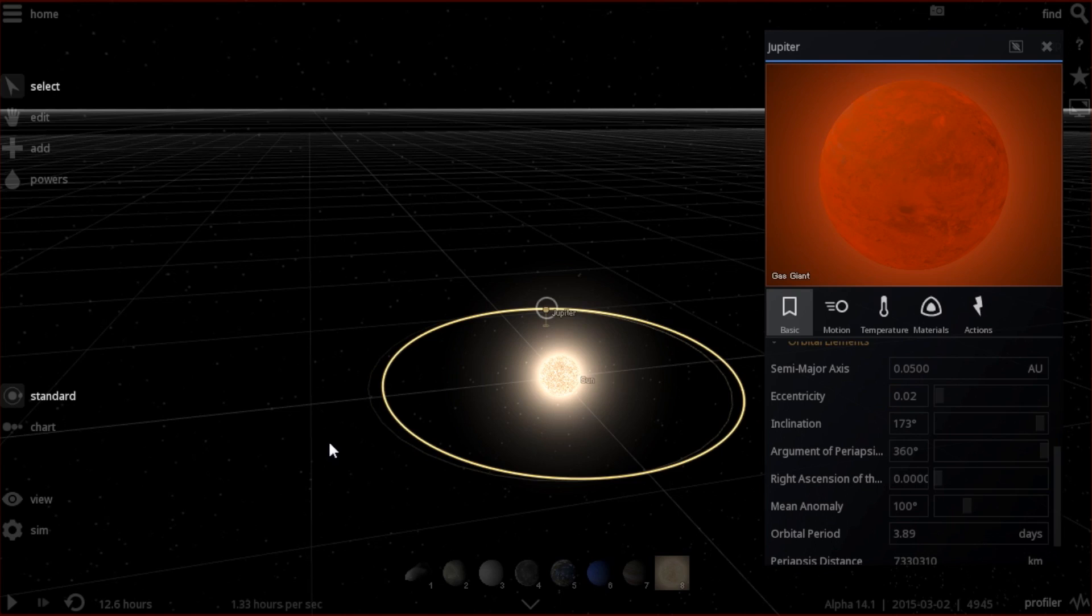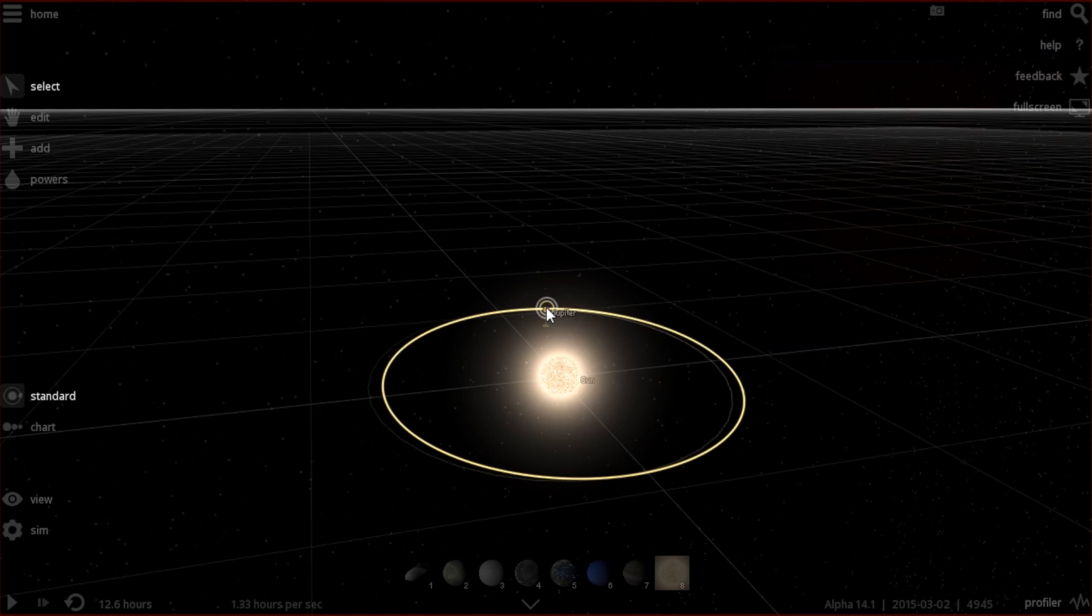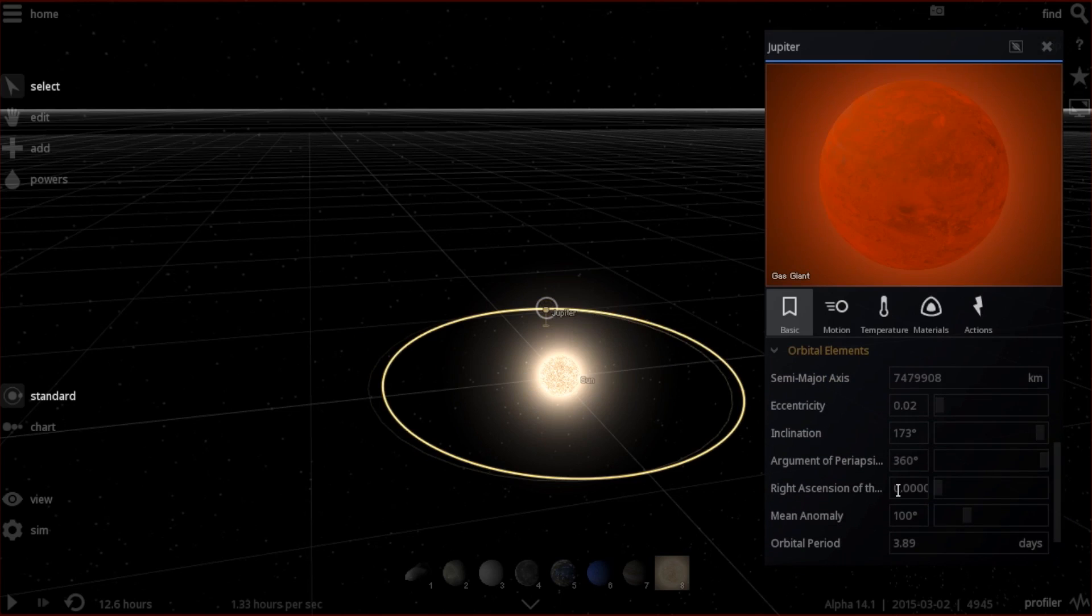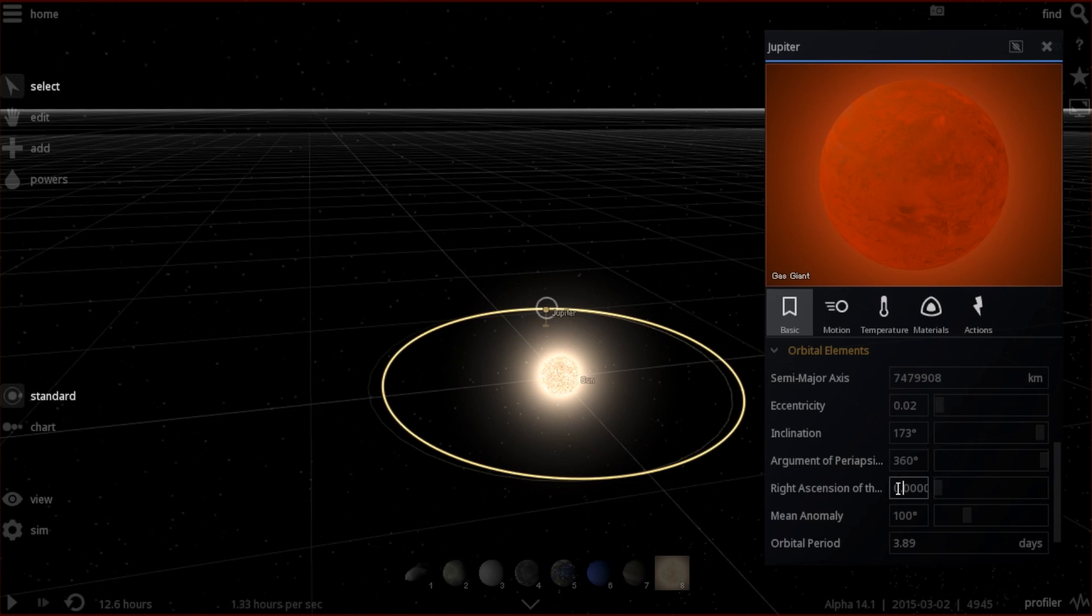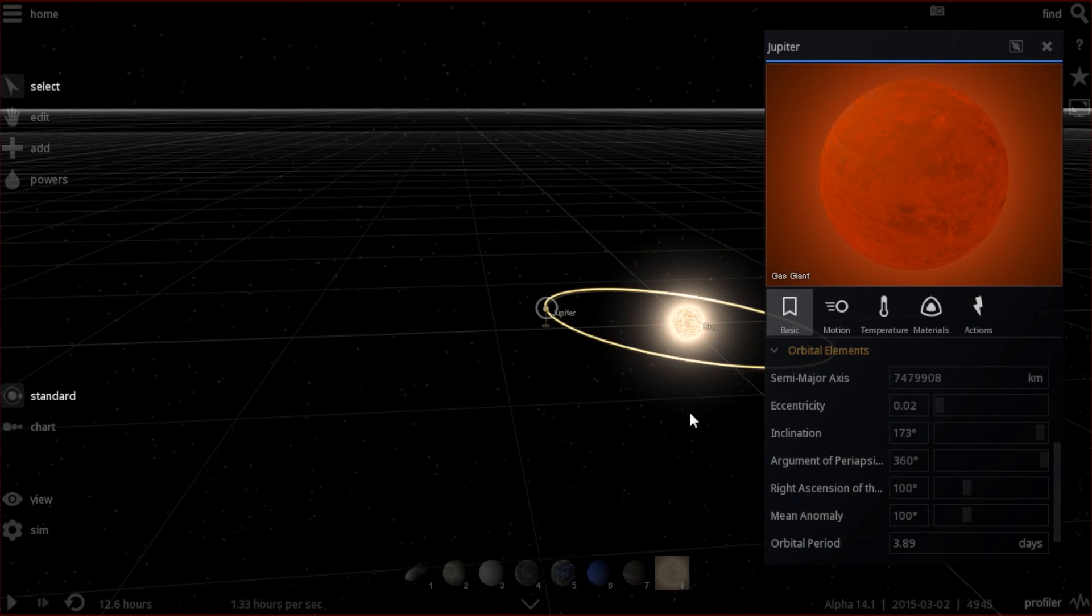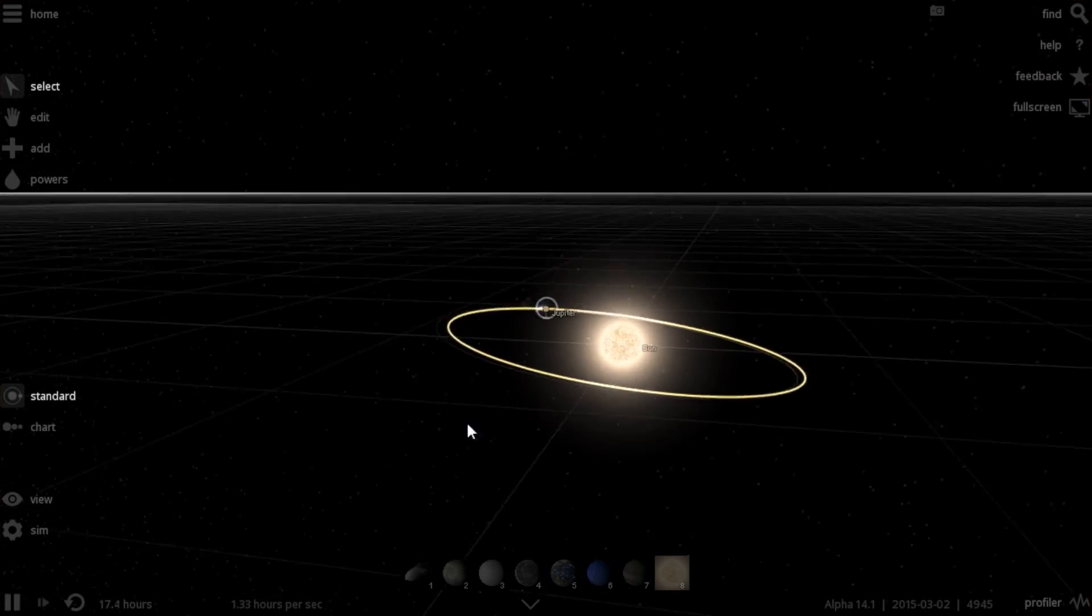And now for the longitude of the ascending node and argument of periapsis. In its simplest terms, both values can range between 0 and 360 degrees, and basically we are free to choose whatever values we wish. I'm going to set my longitude of the ascending node at 100 degrees and the argument of periapsis at 30 degrees. Now, watch what happens when I do this. Here's the longitude of the ascending node and here's the argument of periapsis. Essentially, what I'm doing here is defining how the orbit is orientated in 3D space.